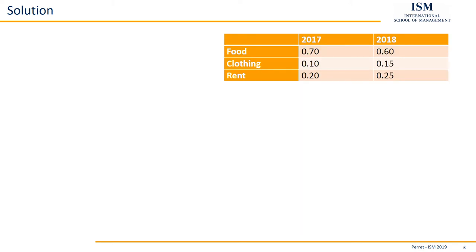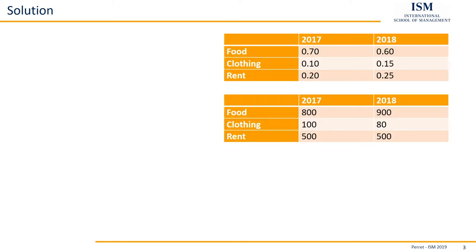We start by recapturing the two tables we had before and then calculating the cost of the representative baskets — or in this case, the relative costs. What we are going to do is, for each year, multiply the shares from the first table with the prices in the second table. So for 2017: 0.7 times 800, plus 0.1 times 100, plus 0.2 times 500.